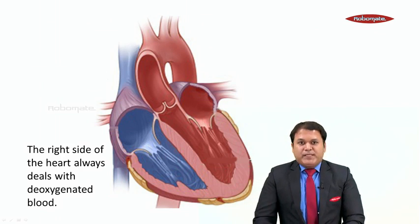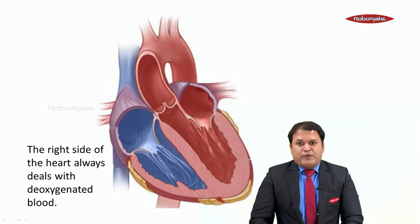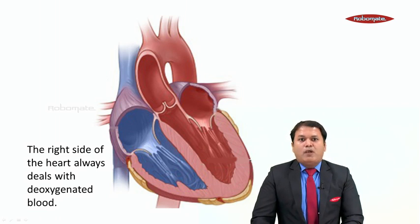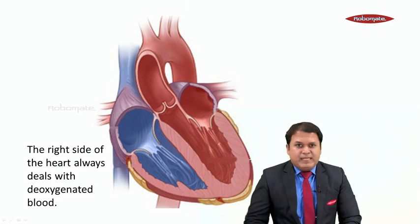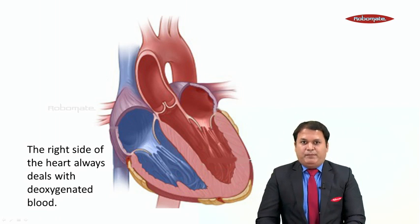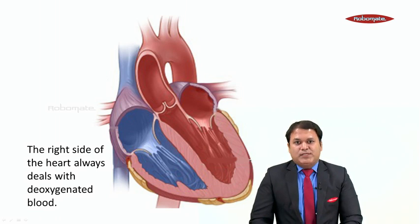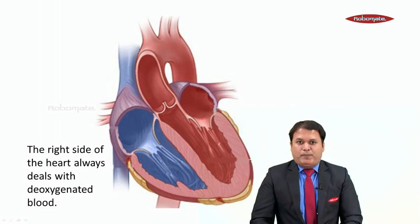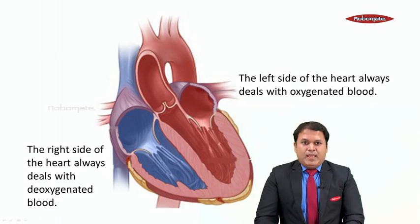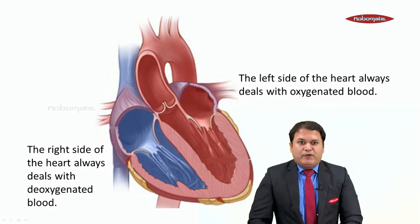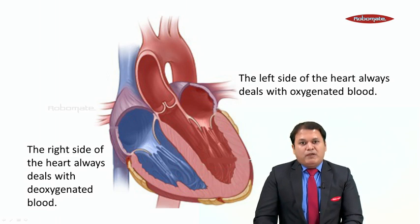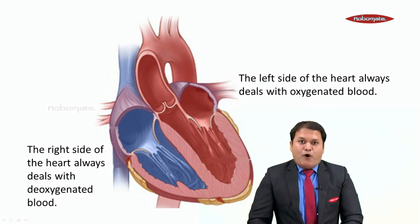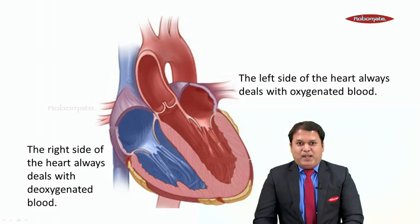One very important thing to notice: the right side of the heart always deals with deoxygenated blood, that is impure blood. And the left side of the heart always deals with oxygenated blood, that is pure blood.